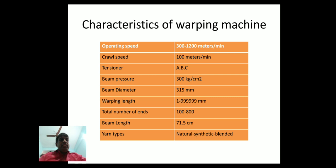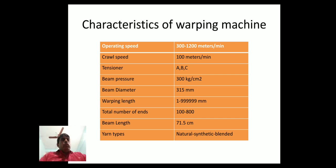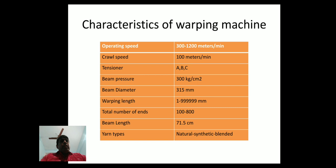Characteristics of the warping machine: operating speed 300 to 1200 meters per minute, crawl speed 100 meters per minute, tensioner types A, B, and C — there are three types of tensioners.